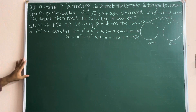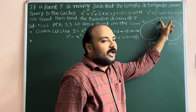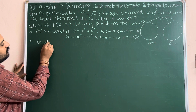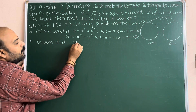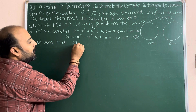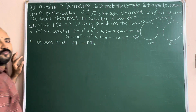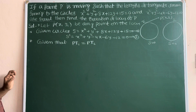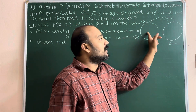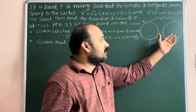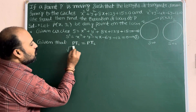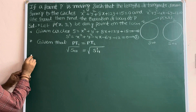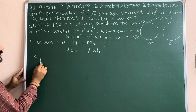Now apply the condition: from point P, the lengths of tangents to both circles are equal. PT₁ is the length of tangent from point P to the first circle, which equals √S₁₁. PT₂ is the length of tangent from point P to the second circle, which equals √S'₁₁. So we set √S₁₁ = √S'₁₁. Here S₁₁ means substituting x₁, y₁ in place of x, y in the first circle equation.